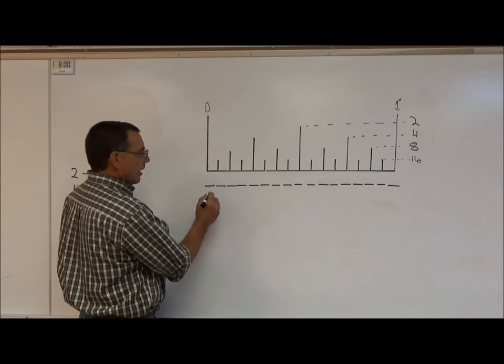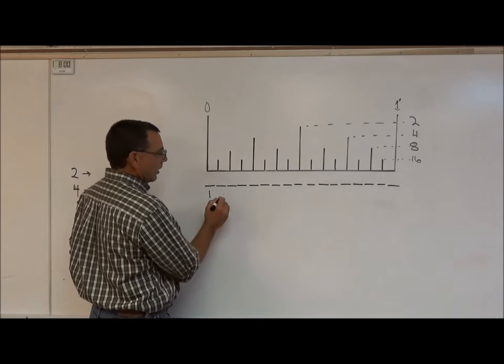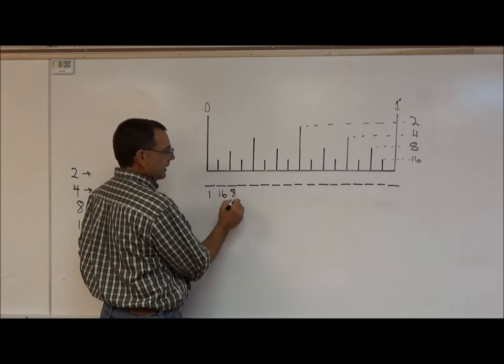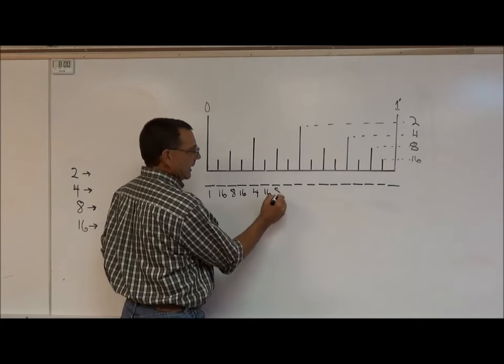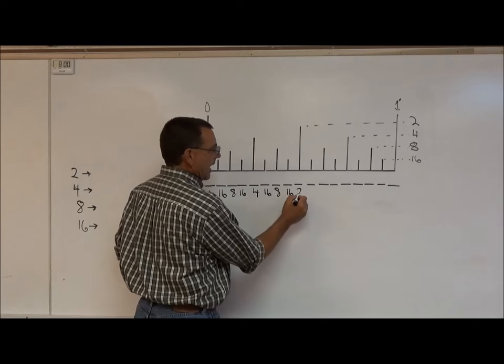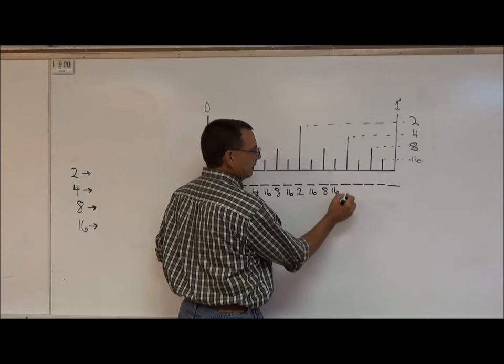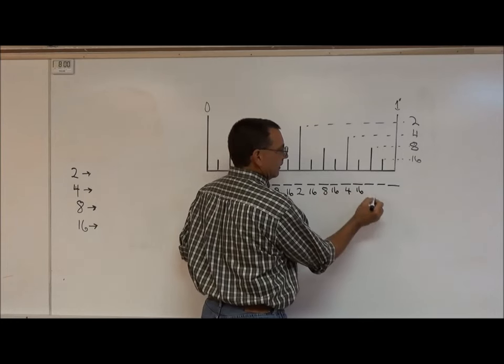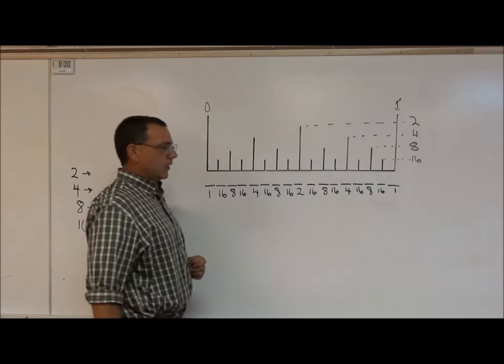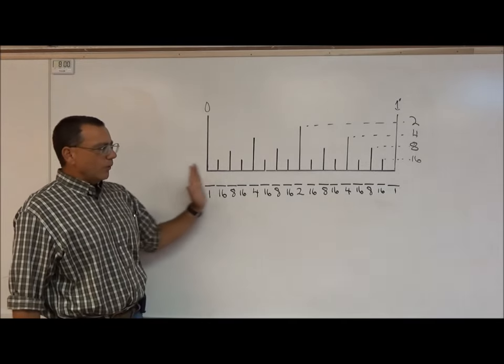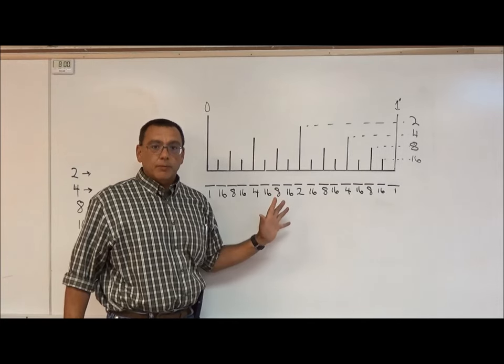So now all I need to do, I know that this is going to be one, it's going to be something over one, then this is a sixteenth, an eighth, a sixteenth, a fourth, a sixteenth, an eighth, a sixteenth, a half, a sixteenth, eight, a sixteenth, four, a sixteenth, eight, a sixteenth, and one again. So now we already know exactly half of whatever the fraction is and that really makes things easy.